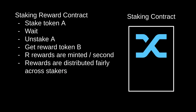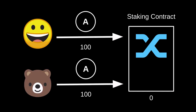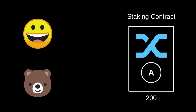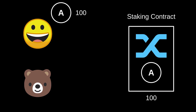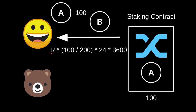Let me illustrate this with an example. Alice and Bob each stake 100 token A at the same time, so there are 200 A tokens total inside the staking reward contract. One day later, Alice decides to unstake her 100 token A. How much token B should Alice receive? R tokens are minted every second. She staked 100 out of 200 tokens, and the length of time she staked is 24 hours — 60 minutes times 60 seconds — which equals 3,600 seconds. So that is the amount of token B she will receive.